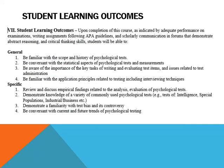Student learning outcomes: upon completion of this course, as indicated by adequate performance on examinations, writing assignments following APA guidelines, and scholarly communication, students will be able to: be generally familiar with the scope and history of psychological tests; be conversant with statistical aspects of psychological tests and measurements; be aware of key tasks of writing and evaluating test items and issues related to test administration; be familiar with application principles related to testing including interviewing techniques; review and discuss empirical findings related to the analysis and evaluation of psychological tests; demonstrate knowledge of commonly used psychological tests; demonstrate familiarity with test bias and its controversy; and be conversant with current and future trends in psychological testing.